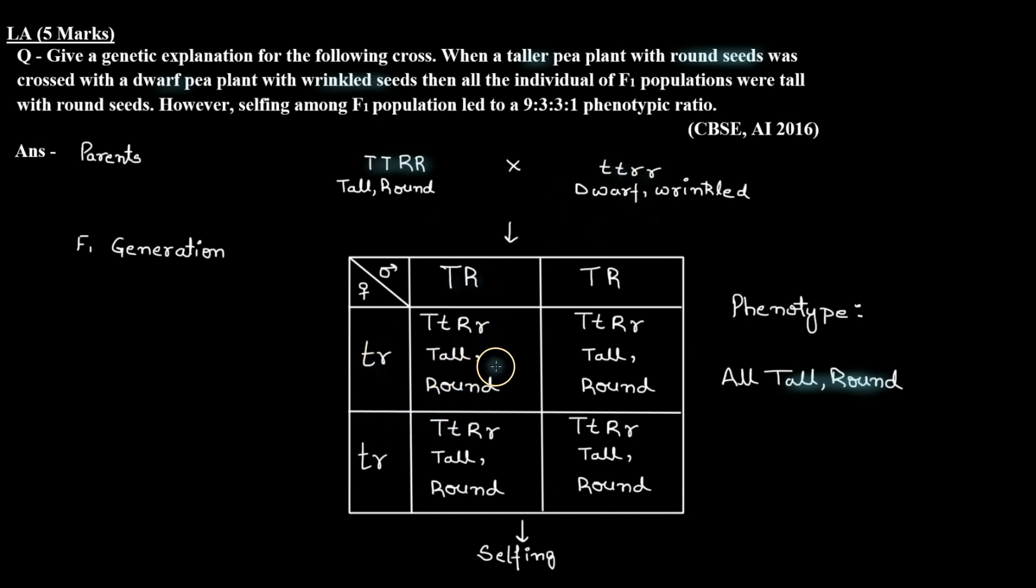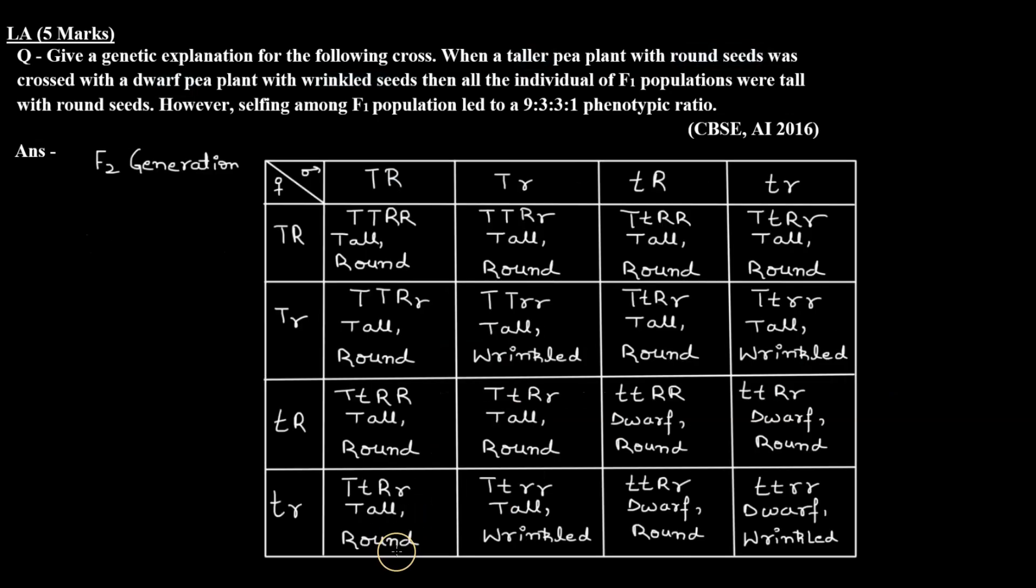When the gametes fuse in F1 generation, then we have four types of gametes: capital T capital R, capital T small r, small t capital R, and small t small r. When the gametes combine in F2 generation, then we have different types of genotypes and different types of phenotypes that you can check on this Punnett square.